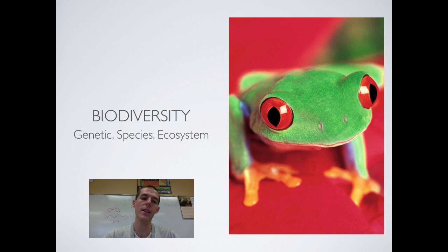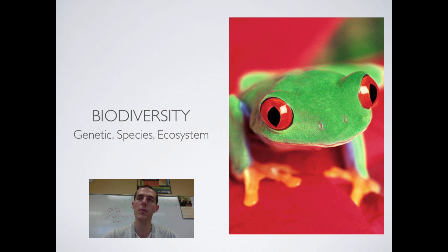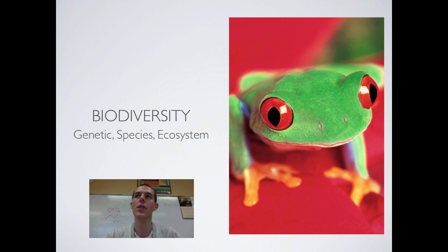The final level of biodiversity is ecosystem biodiversity, which looks at a planetary scale — the globe as a whole. The more ecosystems that are present on Earth, generally the healthier the planet is. If the Earth is out of whack for whatever reason, it's possible that ecosystems will be disappearing, which would indicate that the Earth is probably not in good shape. Be aware of those three types of biodiversity.